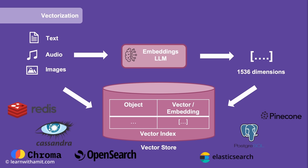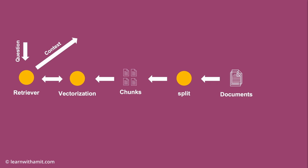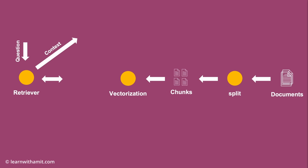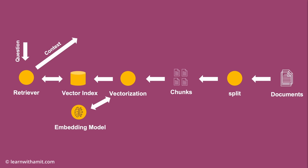Now let's switch back to the retrieval process and add the embedding LLM and vector databases to the process. We have chunks as input to the vectorization process. Vectorization sends these chunks to the embedding LLM to generate vector embeddings, then stores those chunks and their vector embeddings into a vector index. On the retriever side, the retriever sends the question to the embedding LLM to generate a vector embedding for the question itself. Once it has the vector embedding of the question, it can search for relevant chunks from the vector index, which returns relevant chunks based on their proximity to the question. This completes the retrieval step of the RAG architecture.